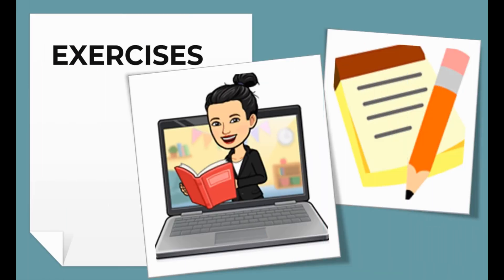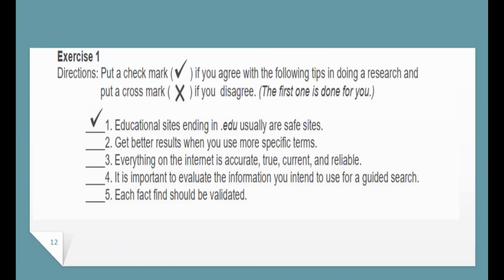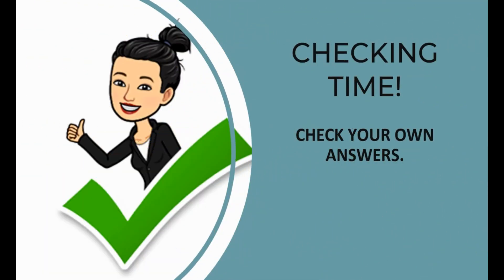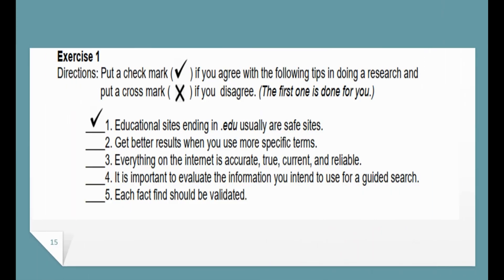Let's apply what you just learned by doing some exercises. Go to page two of your home task. Put a check mark if you agree with the following tips in doing research, and a cross mark if you disagree. The first one has been done for you. Number one: educational sites ending in dot edu usually are safe sites. It's checking time — let's see if you got your answers correctly. Check your own work. Number two: get better results when you use more specific terms. Number four: everything on the internet is accurate, true, current, and reliable. Number five: it's important to evaluate the information you intend to use for a guided search. Number six: each fact found should be validated.